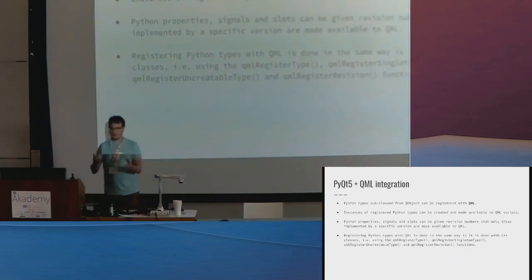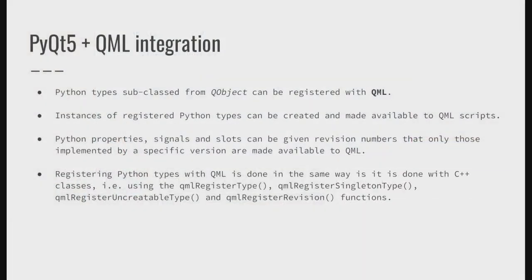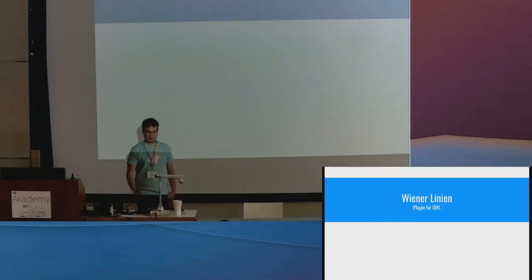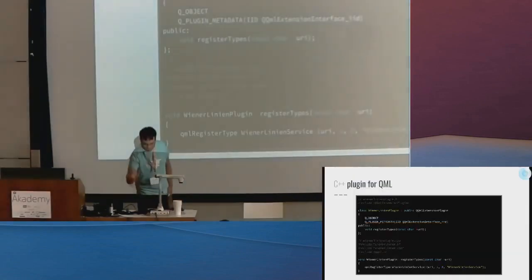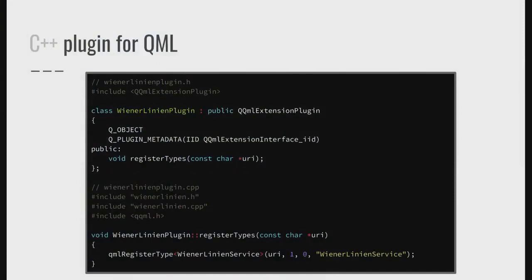So what is all this binding stuff? Basically, it allows you to use QML in your Python world, to have access to all classes provided by the Qt framework. And I think the best demonstration is to just show an example. You may already be familiar with the Wiener Linien, the public transportation service here in Vienna, and I wanted to see the departure times of my bus leaving right when I walk out.